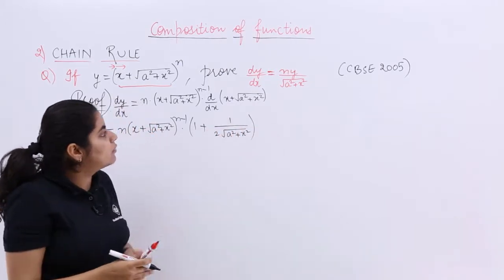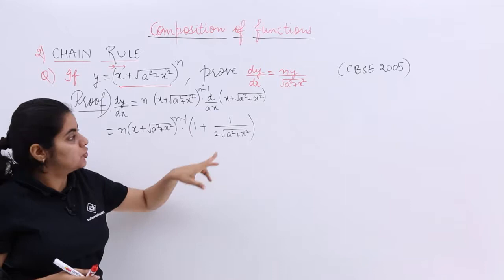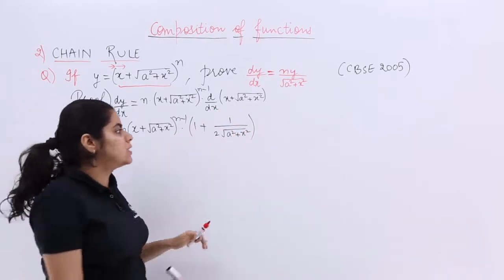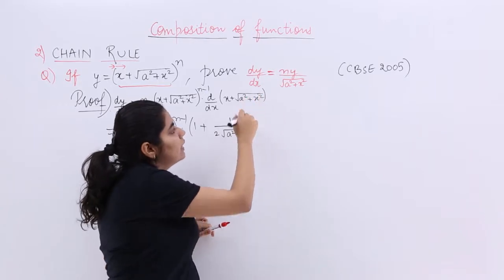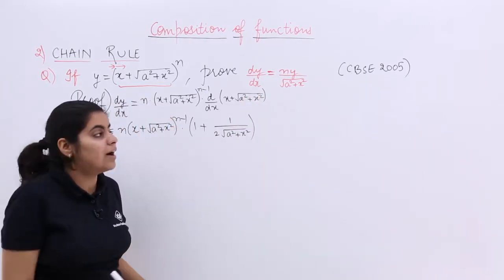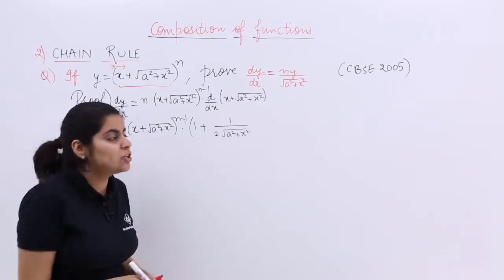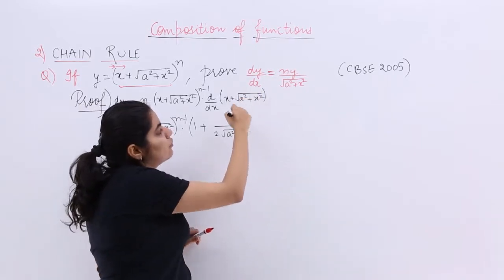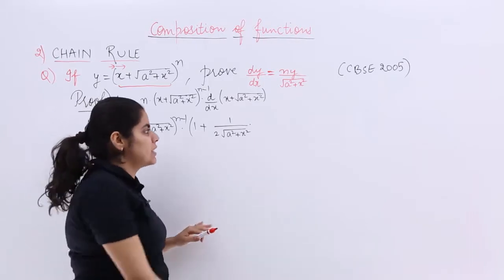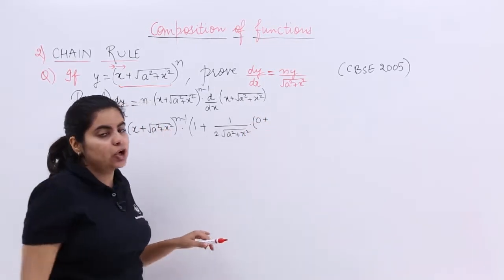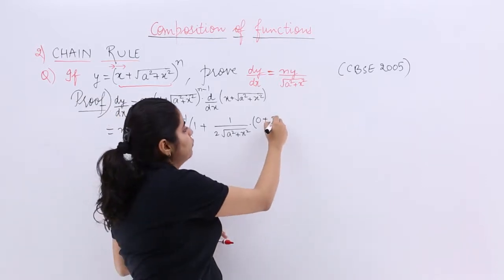Next is nothing but our encounter with something called as the a square plus x square. See, what we did? We encountered x, we put the differentiation. We encountered root, we put the differentiation. But when we saw that the root was not over, we have something else also, so we have to do differentiation of that also. What is the differentiation of a square plus x square? Only a square plus x square. See, a square has differentiation of 0 being a constant, x square that of 2x.